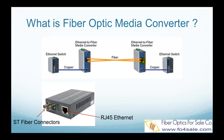Once the light pulses reach their destination, they are channeled into the optical receiver part of the media converter on the other end. The optical receiver converts them into an electronic signal containing the information coded on the light at the transmitting end.